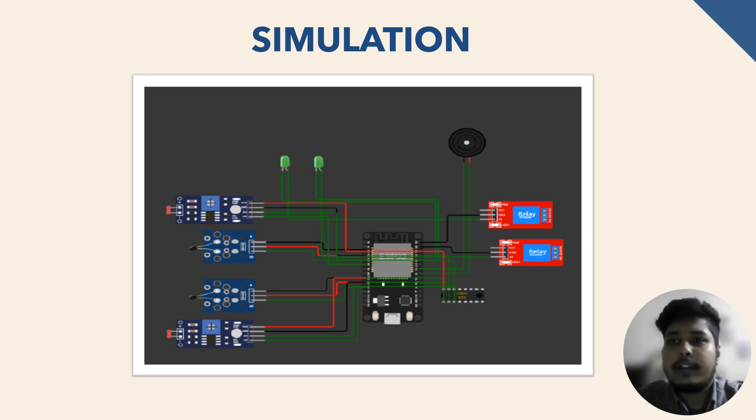In summary, each component of the fire screen alert system plays a crucial role in detecting fire emergencies and allowing individuals to take timely action. By working together, these components form a comprehensive and effective safety solution for protecting lives and property in emergency situations. My next group member, Sarwar Hossain, will continue the presentation.